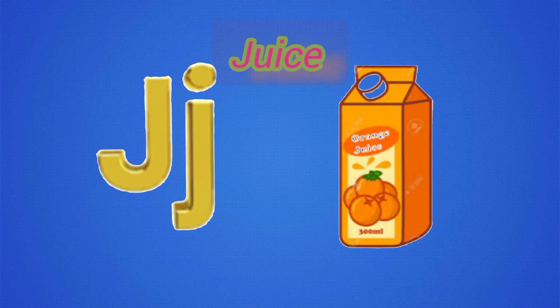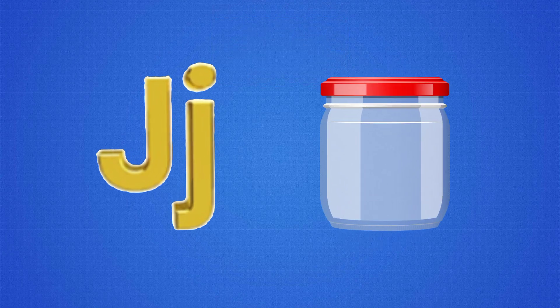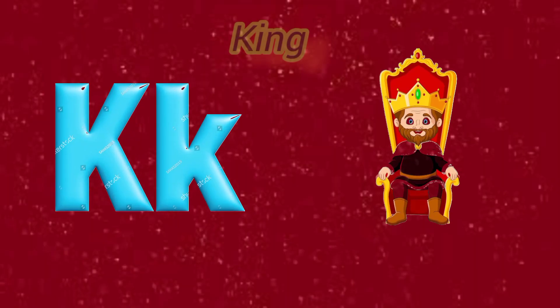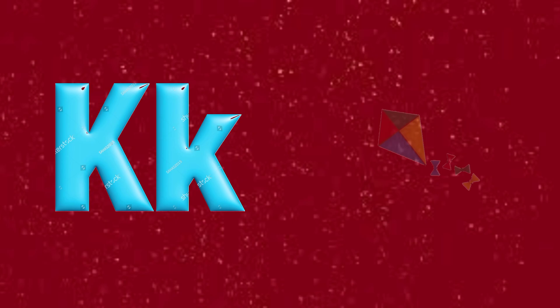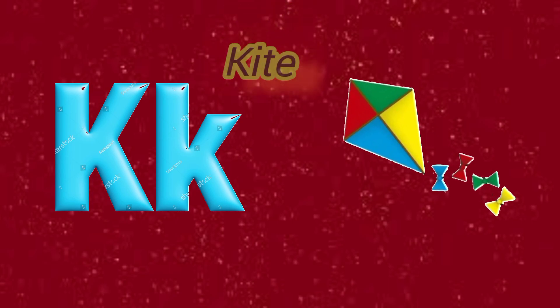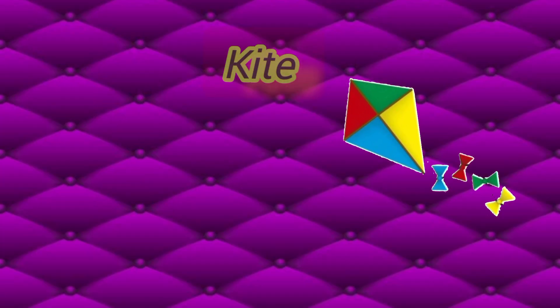J for juice and J for jar. K for king and K for kite.